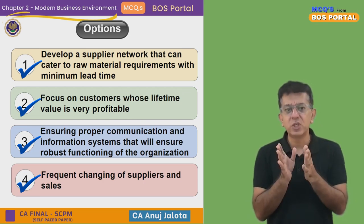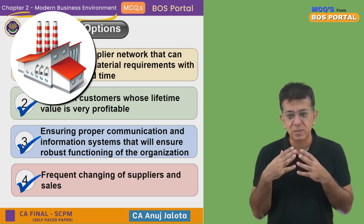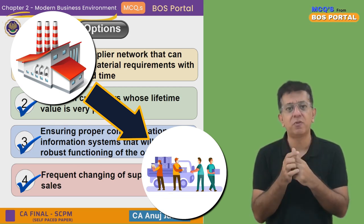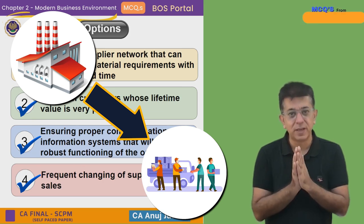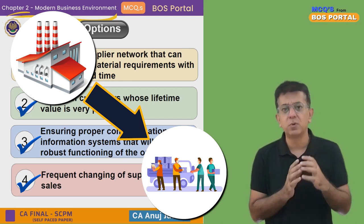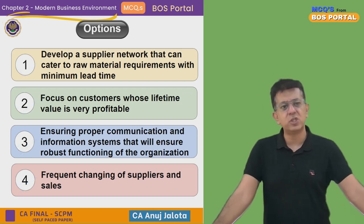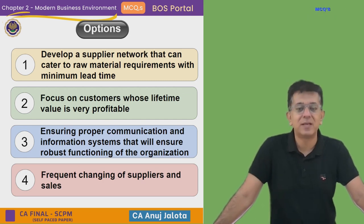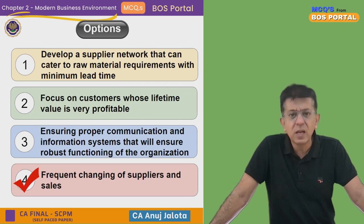Frequent changing of suppliers and sales — 'sales' here means sales or distribution. For example, if we are a factory supplying to wholesalers or distributors, and those distributors keep changing, it will become very difficult to control your sales. Distributors over a period of time start understanding when you supply and where they need to sell. So you should always concentrate on having the same suppliers and distributors, provided they are good. Therefore, Option D — frequent changing of suppliers and sales — is the false statement. In supply chain management we always try to avoid frequent changes, so Option D is the correct answer.